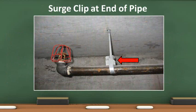When sprinkler heads fuse, the water inside is under tremendous pressure and can cause the piping to rotate when there is space between the branch line and the bracing. Surge clips are installed to hold the pipe in place.